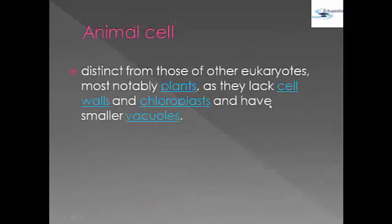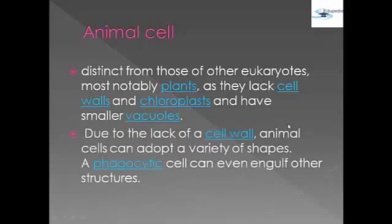Animal cells are distinct from those of other eukaryotes, most notably plants, as they lack a cell wall and chloroplasts, and have a smaller vacuole. Due to the lack of a cell wall, animal cells can adopt a variety of shapes. A phagocytic cell can even engulf other structures.